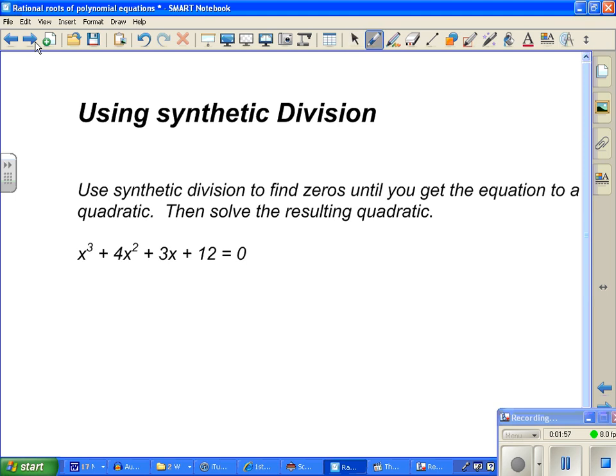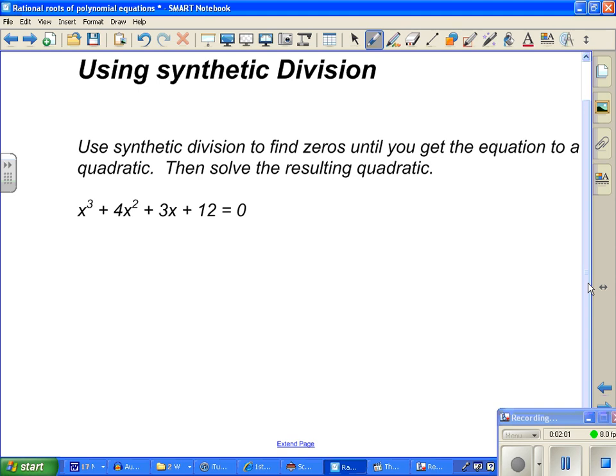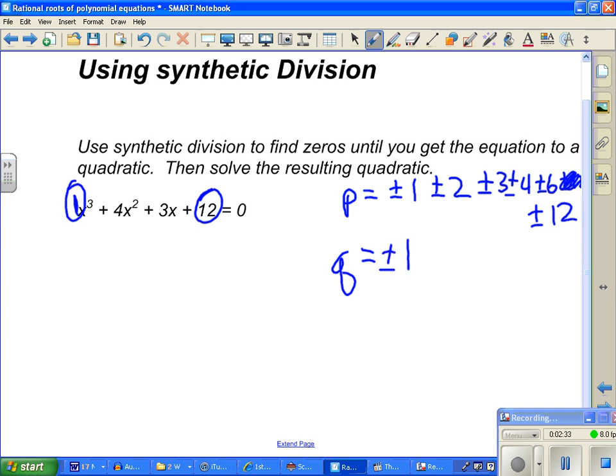So P are factors of the constant term. Plus or minus 1, plus or minus 2, plus or minus 3, plus or minus 4, plus or minus 6, plus or minus 12. And then Q equals the factors of the leading coefficient, which in this case is 1. So that's plus or minus 1. Well, P over Q, nothing's going to change because I'm dividing all my P's by 1. So there's all my possibilities.